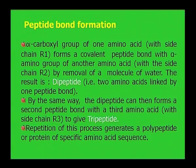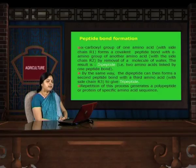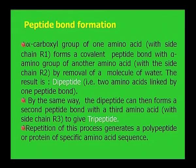When two amino acids are joined the result is a dipeptide. The two amino acids linked by one peptide bond is called dipeptide. Similarly, a dipeptide can then form another peptide bond with a third amino acid and form a tripeptide. Polypeptides are the repetition of amino acids forming peptides or proteins.